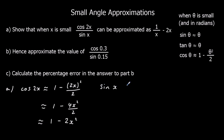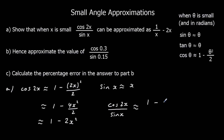So cos 2x over sin x is approximately (1 minus 2x squared) over x, which simplifies to give us 1 over x minus 2x, and that's what we wanted.